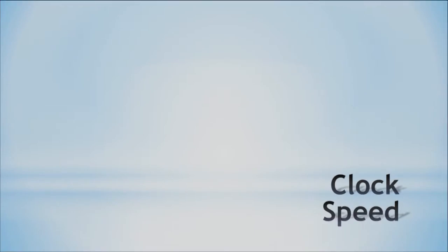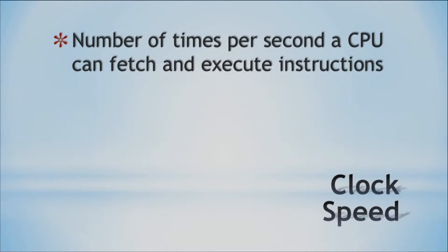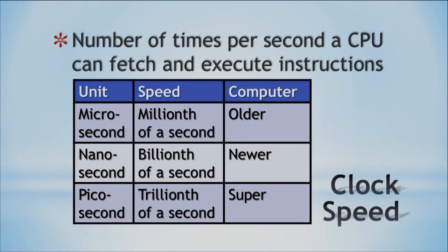Now let's look at the processing speed — the clock speed. The clock speed is basically the number of times per second that a CPU can fetch and execute an instruction. A microsecond is a millionth of a second, and a lot of older systems were able to work at this speed. Some newer systems now are actually operating at a nanosecond, which is one billionth of a second.